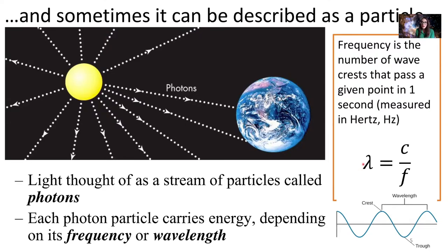Wavelength is measured in units of distance — meters, or sometimes nanometers, where one nanometer is 10 to the minus 9 meters. The wavelength of light equals the speed of light divided by the frequency: λ = C / f. Rearranging, frequency equals the speed of light divided by the wavelength: f = C / λ. The speed of light is 3 times 10 to the 8 meters per second.